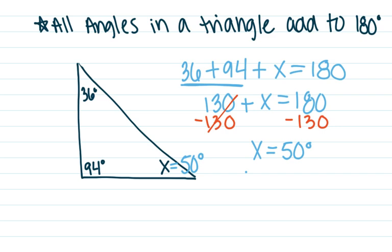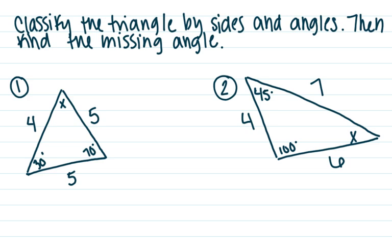Let's practice. Classify the triangle by sides and angles, then find the missing angle. Looking at number one, I have sides of four, five, and five — two sides that are the same. When I have two sides that are the same, that is going to be an isosceles triangle.